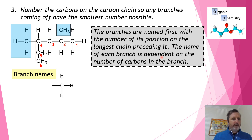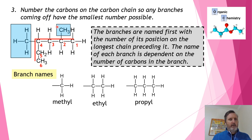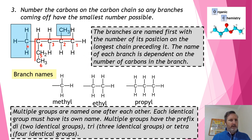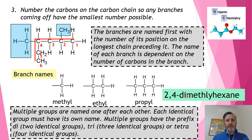There are specific names for each branch depending on how many carbons they have: one carbon is a methyl group, two is an ethyl group, and three is a propyl group. In this case we have two methyl groups. Because they are two identical groups, instead of saying 'two-methyl, four-methyl' we say '2,4-dimethyl'. So the full name for this molecule is 2,4-dimethylhexane — written as one word.